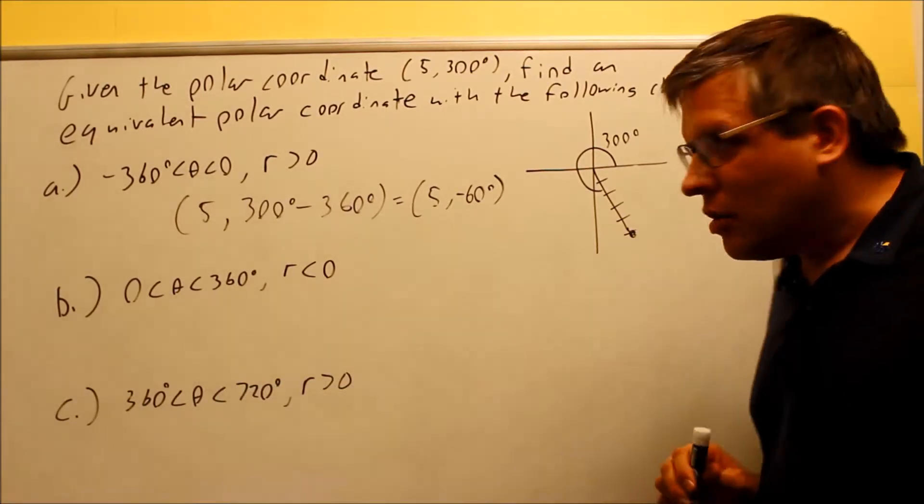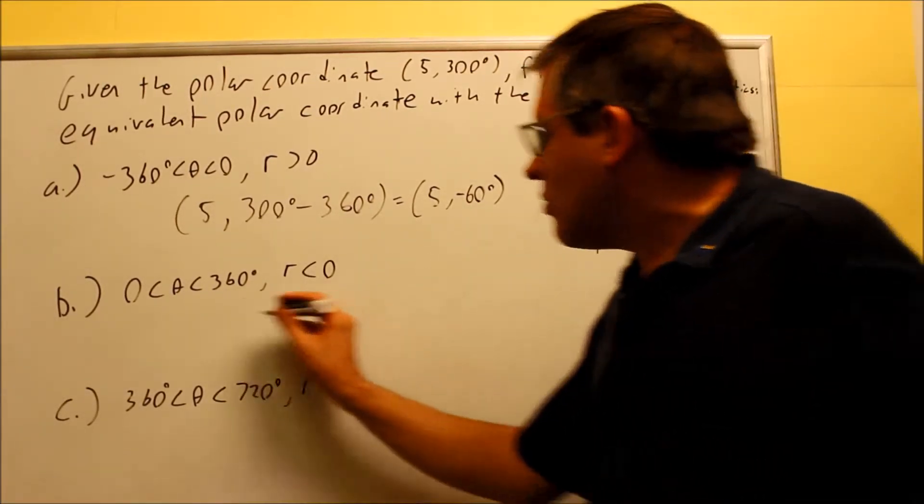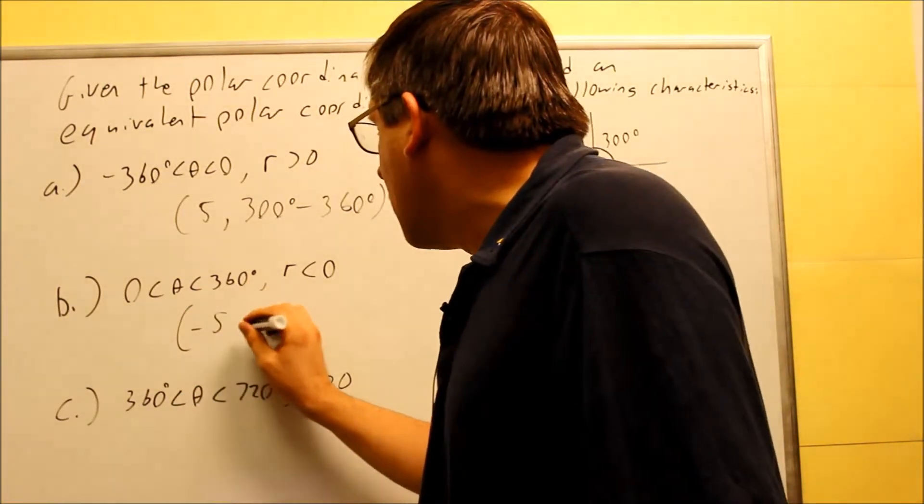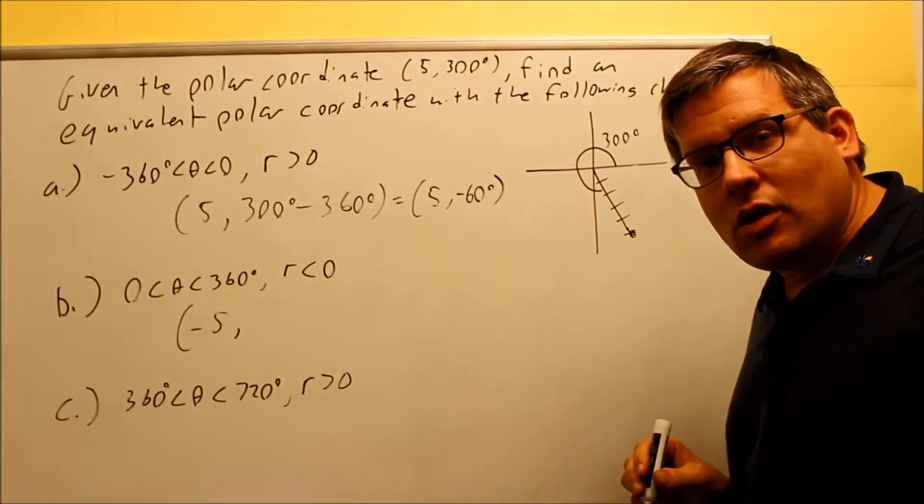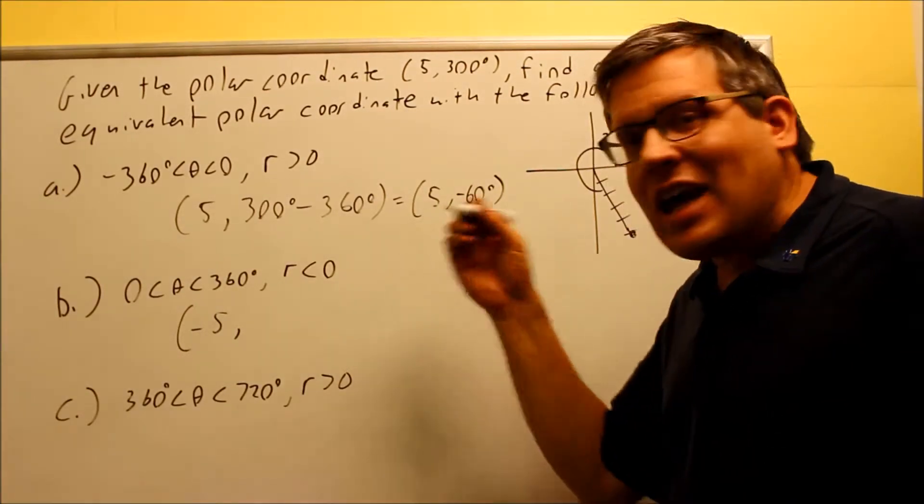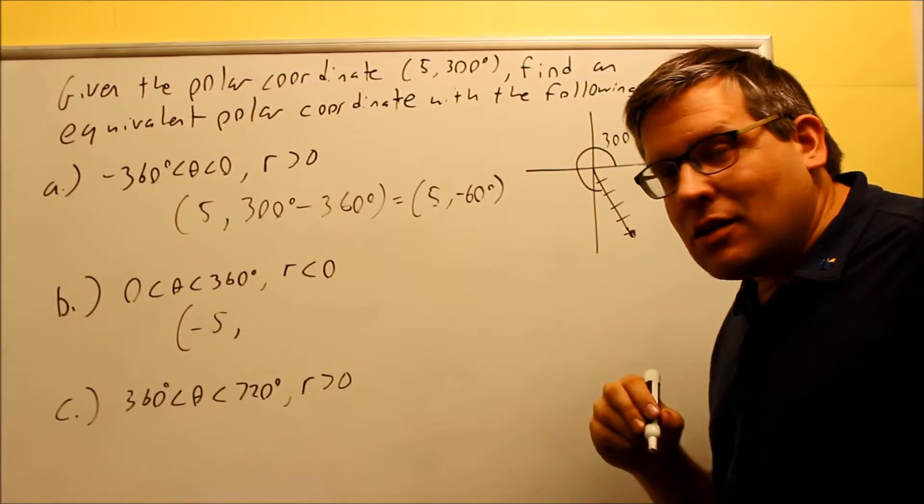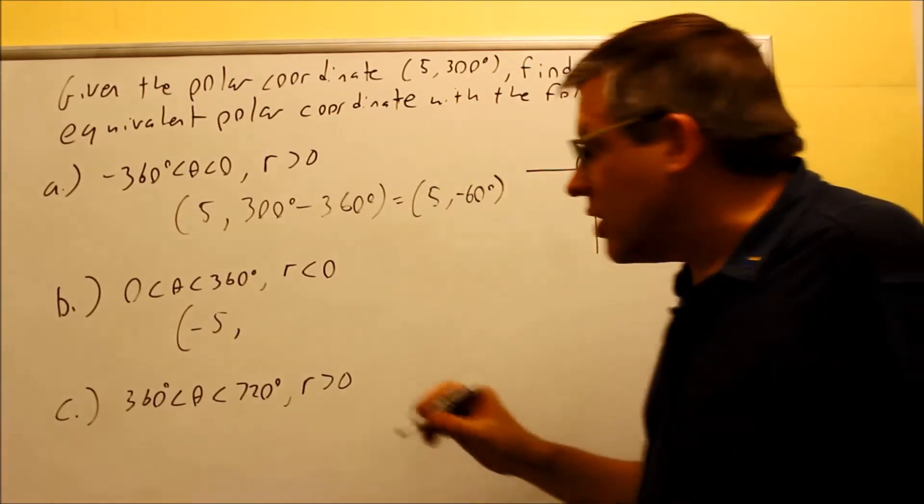Let's now do this one. Okay, now this one, the r has to be negative. So I did change the sign of the r. It was originally positive and now I'm turning it into a negative. So because of that, I need to add or subtract 180 from the 300 degrees.